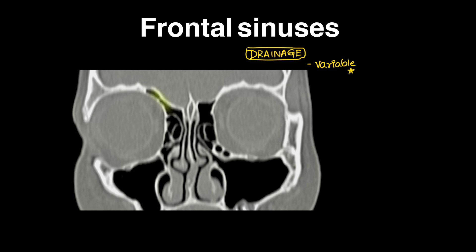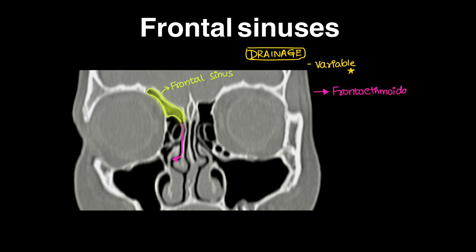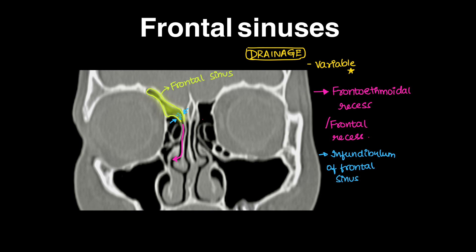Coming to drainage pathways — the frontal sinus has variable anatomy, not constant between patients. Here in green we can see the frontal sinus on a coronal CT section, and the pink line shows the drainage pathway of both frontal sinuses into the nasal cavity, draining into the middle meatus below the middle turbinate. This canal is called the fronto-ethmoidal recess, because the ethmoid sinus also drains through the same recess. If the frontal sinus alone drains through this pathway, it's called the frontal recess. The area of the frontal sinus adjacent to the ostium is the infundibulum of the frontal sinus.